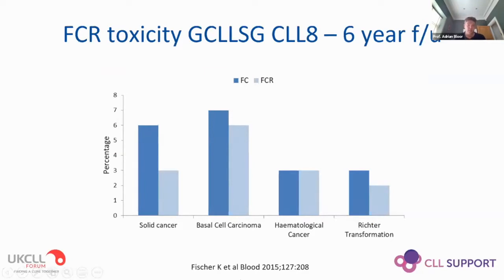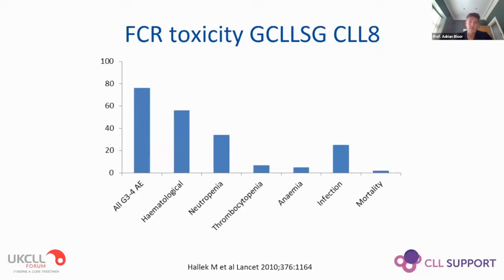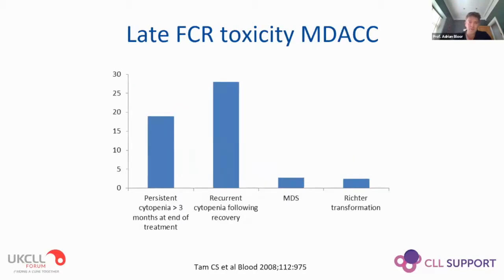What about toxicity? These are key toxicities observed in the CLL8 trial looking at incidence of second malignancy - solid tumors, skin tumors, and hematological malignancy. In both FC and FCR arms there was an appreciable incidence of second malignancy with six years of follow-up, and with longer follow-up this gets worse. Looking at short-term toxicity in the same trial, the majority of patients develop grade 3-4 toxicity; about half get grade 3-4 hematological toxicity. Concerns exist both short- and long-term, though for young fit patients short-term toxicity is manageable.